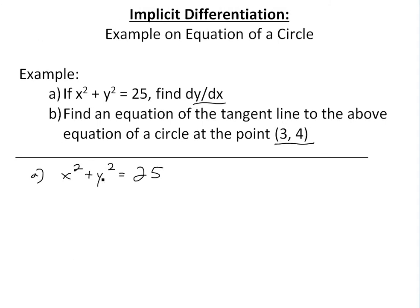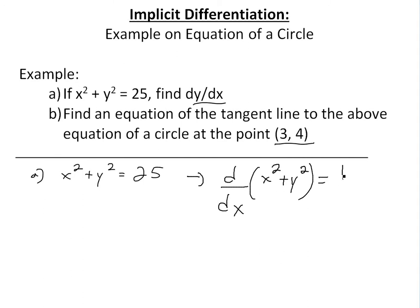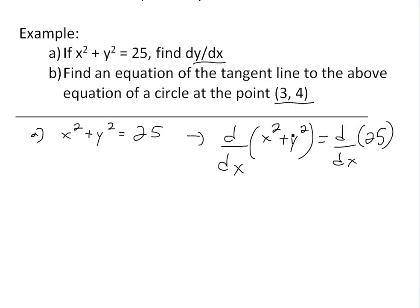You could either find y in terms of x and then take the derivative, but that is more complicated, as I will show. Or you could just take the derivative of both sides — that's implicit differentiation — meaning taking the derivative of both the left and right sides, because whatever we do to the left has to be the same on the right. So derivatives have to be the same if these are the same functions.